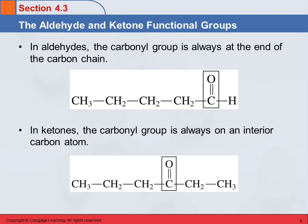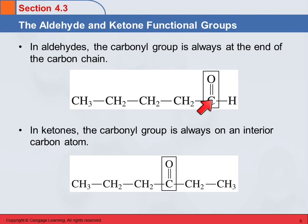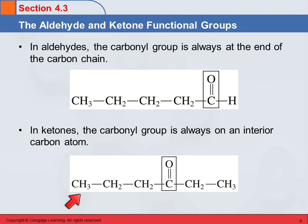Looking at the difference between aldehydes and ketones: in an aldehyde, that carbonyl group has to be on the end of the chain because there has to be a hydrogen — it can only have that if it's on the end. It could be on either end, but it can't be in the middle. With a ketone, the carbonyl group has to be in the middle; it cannot be on the end carbon because then it would be an aldehyde.